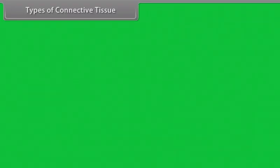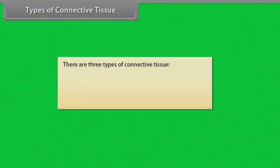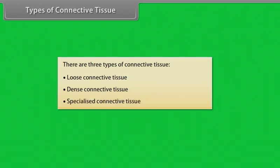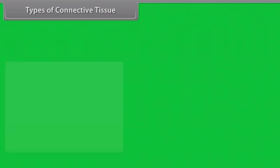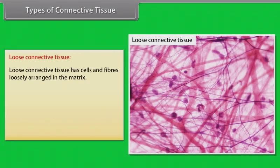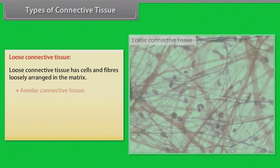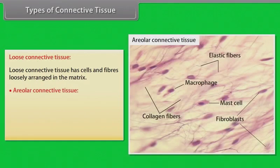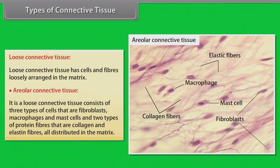Types of connective tissue. There are three types: loose connective tissue, dense connective tissue, and specialized connective tissue. Loose connective tissue has cells and fibers loosely arranged in the matrix. Areolar connective tissue consists of three types of cells — fibroblasts, macrophages and mast cells — and two types of protein fibers — collagen and elastin fibers — all distributed in the matrix.